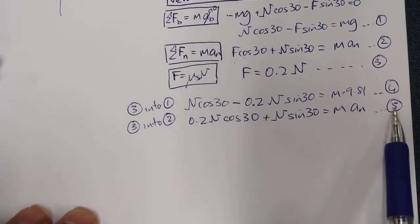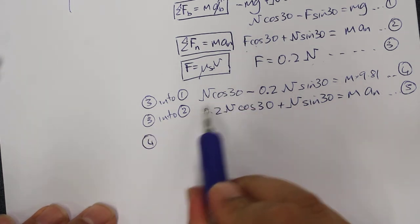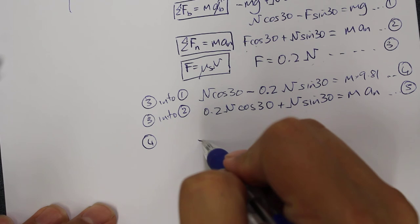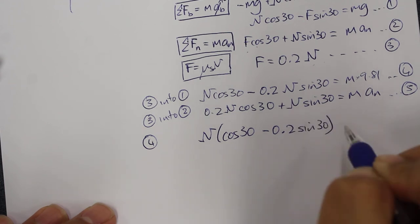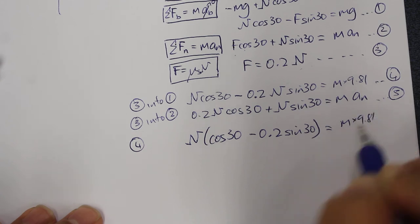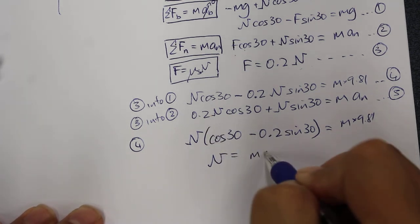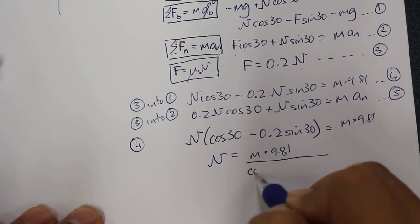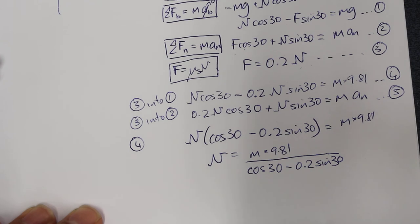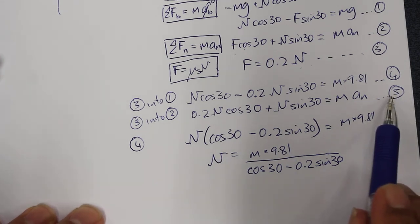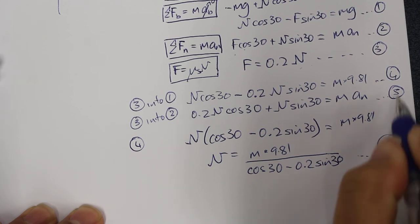We call these equation 4 and equation 5. We rearrange both to make N the subject. For equation 4, factoring out N gives N·(cos30° − 0.2·sin30°) = m·9.81, so N = m·9.81 divided by (cos30° − 0.2·sin30°). This is equation 4b.